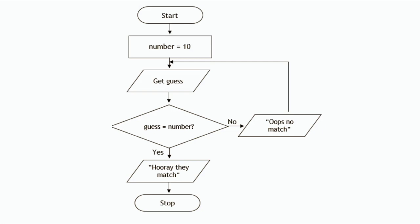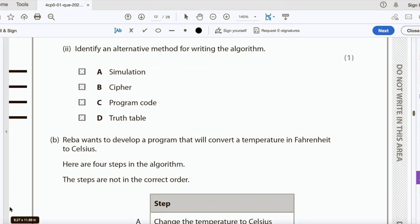You could set number=10 after getting the guess, but placing it at the start is more efficient — that way you're not resetting the number every time an incorrect guess is made. Identify an alternative method for writing the algorithm: it's not simulation (that's a complete program), not cipher (that's encryption), not truth table (that's for testing) — the answer is C, program code.